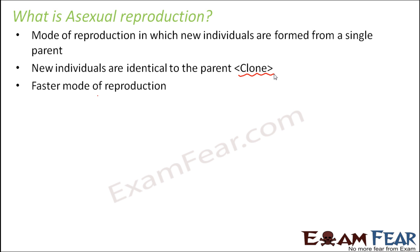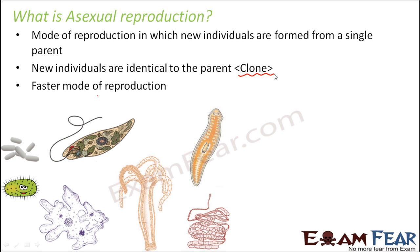It is a faster mode of reproduction because a lot of individuals can be produced at the same time, so the rate of reproduction is very high. Asexual reproduction takes place mostly in unicellular organisms like bacteria, amoeba, and also in lower animals like hydra, planaria, tapeworm, and euglena. It is also seen in plants with simpler body organization — for example, onion, rose, and potato.